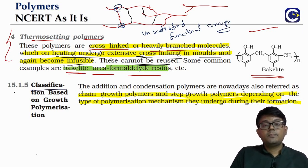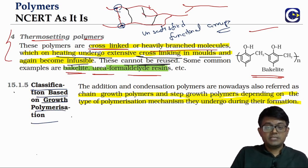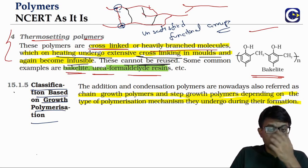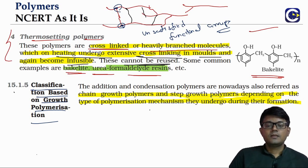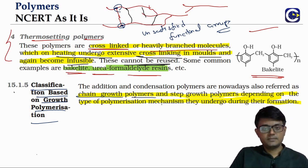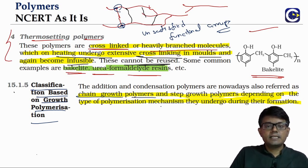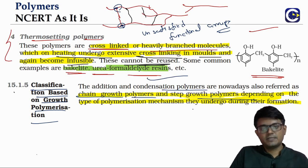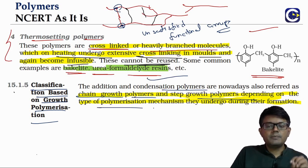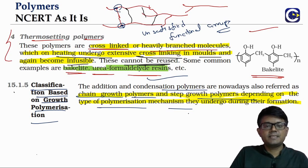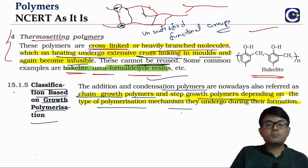Polymers can also be classified based on the polymerization mechanism. Addition polymers are now called chain growth polymers because the chain length grows step by step. Condensation polymers are called step growth polymers. So: chain growth = addition polymerization; step growth = condensation polymerization. We will study the mechanism in detail.